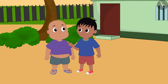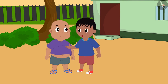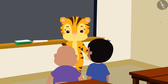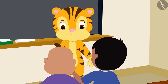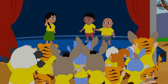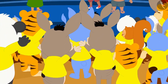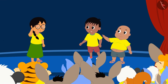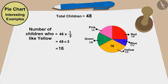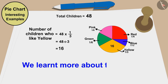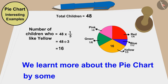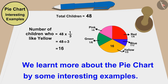Bablu, let's quickly tell Mrs. Khan that most of the children like yellow color. Raju and Bablu conveyed this to Mrs. Khan and then all the children celebrated the annual festival with great enthusiasm by wearing yellow shirts. Children, in this video, we learned more about the pie chart by some interesting examples. In the next video, we will see some common mistakes related to this.